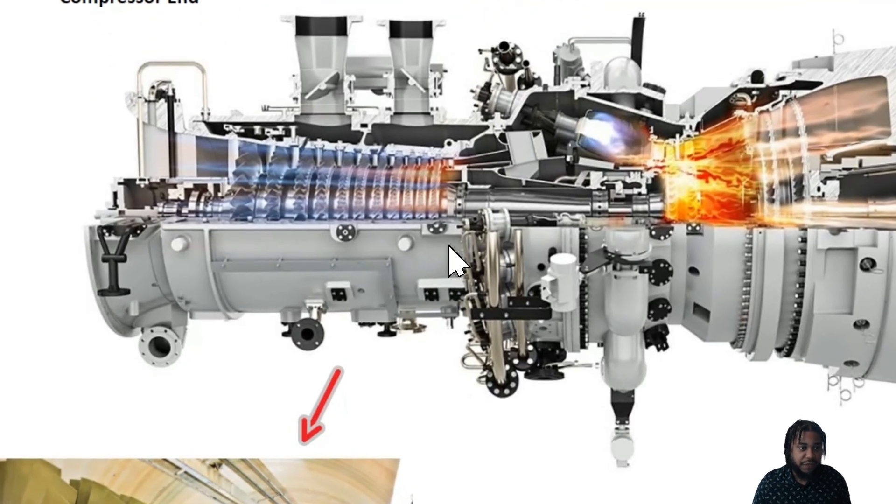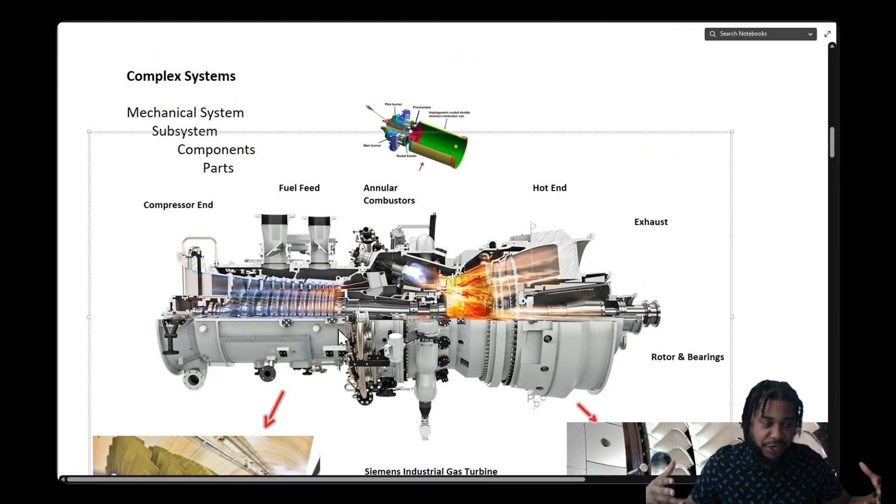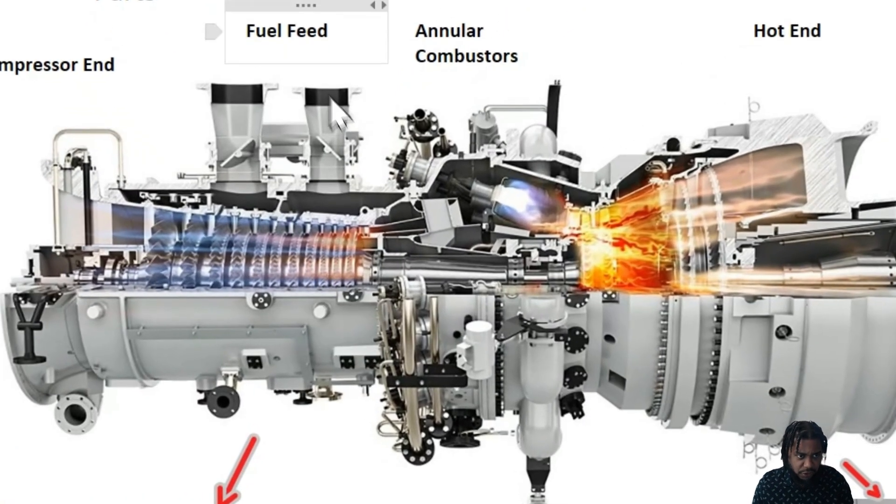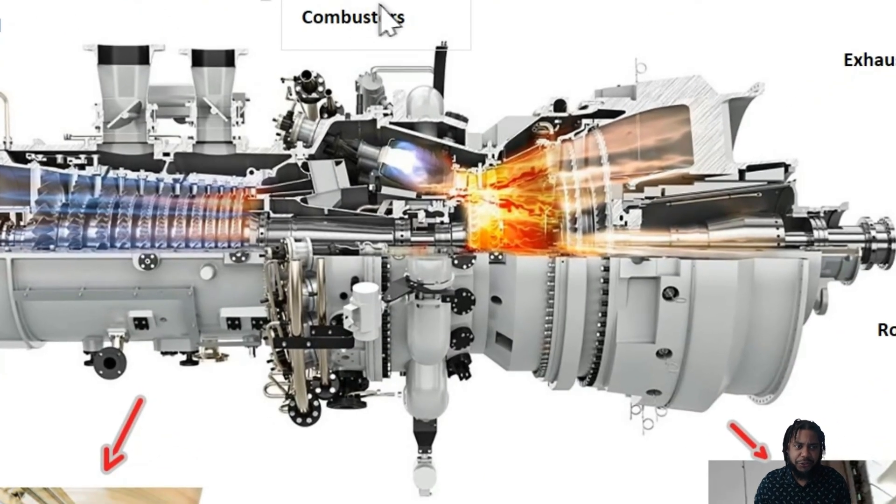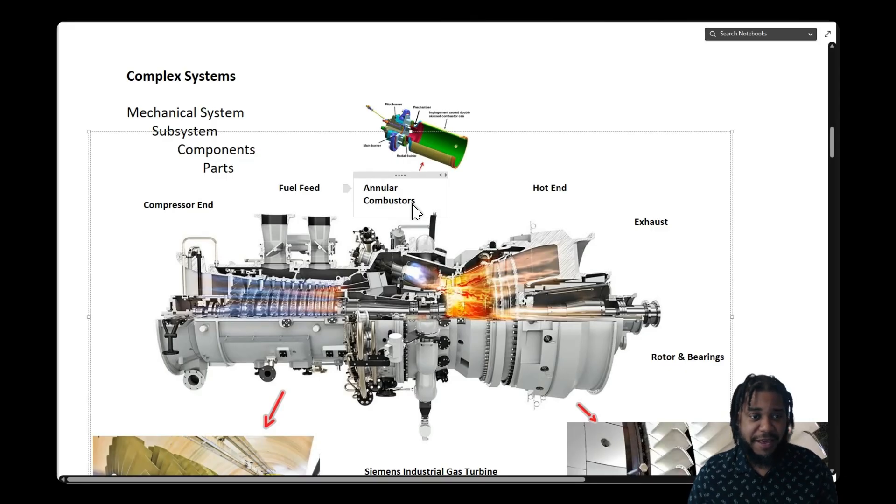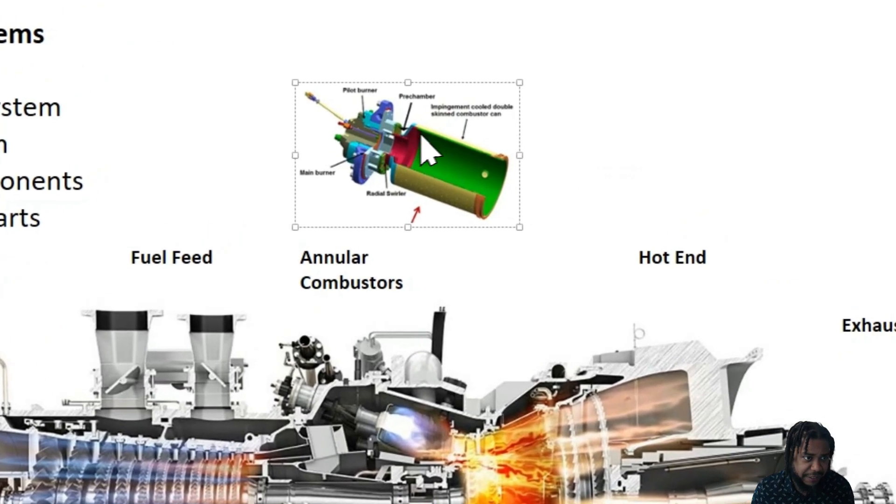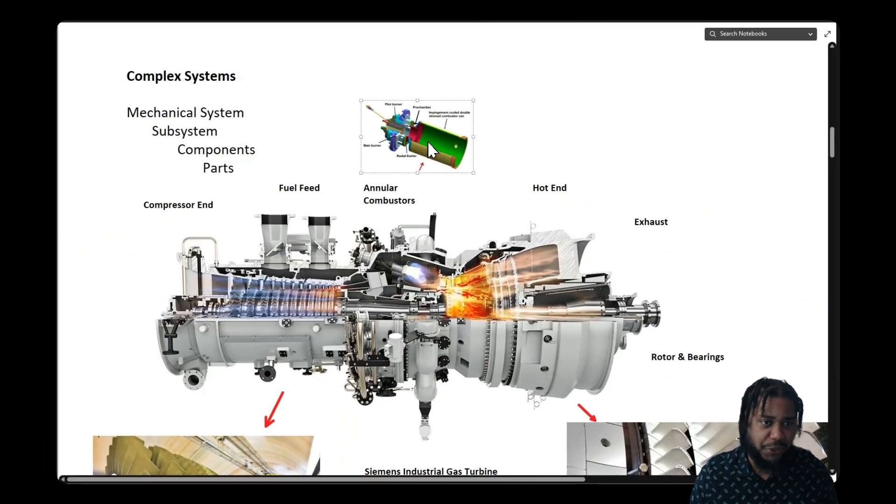Inside that mechanical system there are various subsystems. There's the compressor end on the front where air is compressed through a series of multiple blades. There's a fuel feeding system where we feed in either natural gas or coal that's been gasified. Then we've got the combustion region where we have angular combustors that take that compressed air with fuel mixture and ignite it. Usually there's about 16 of these combusters in a ring in that zone.